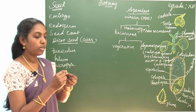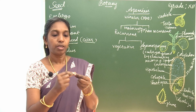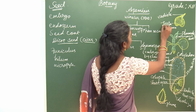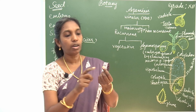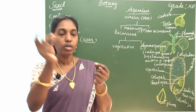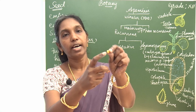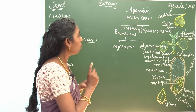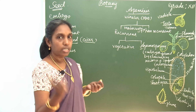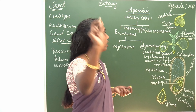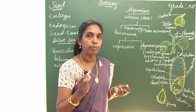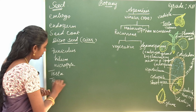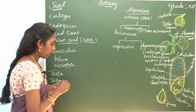There are two seed coats. The outer seed coat is known as testa. The inner is a thin membrane called tegmen. So two seed coats: outer one is testa and inner one is tegmen.